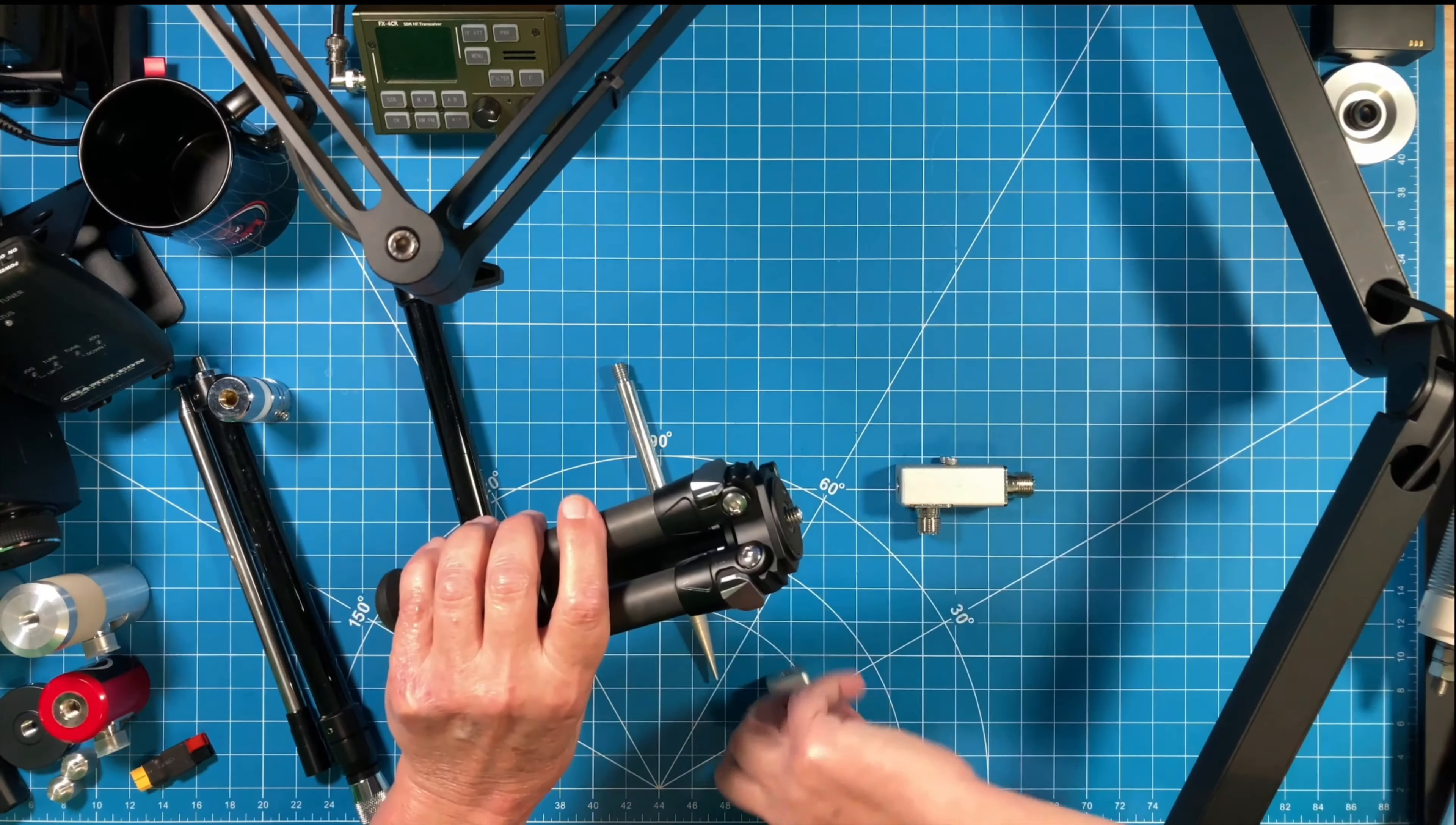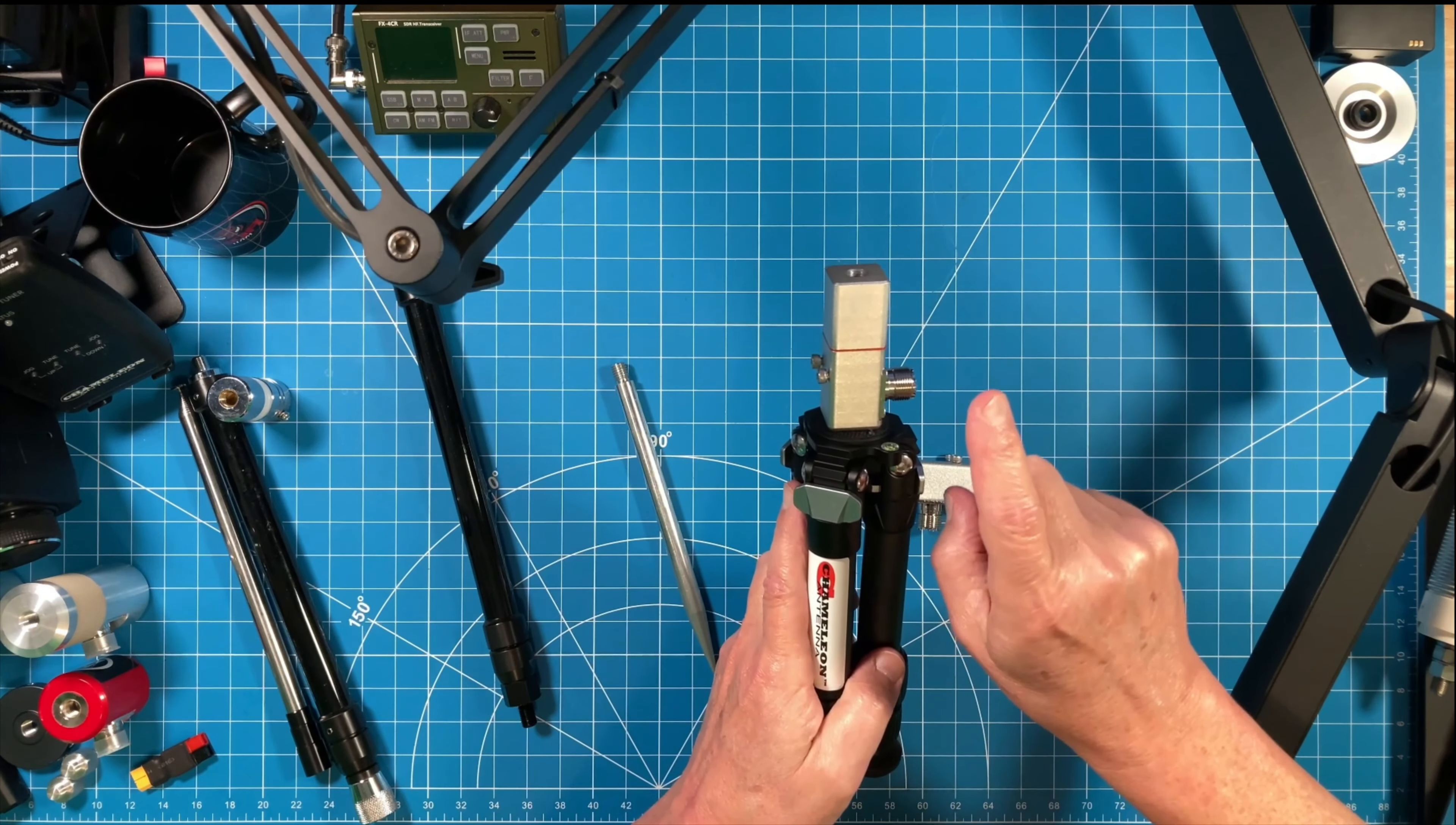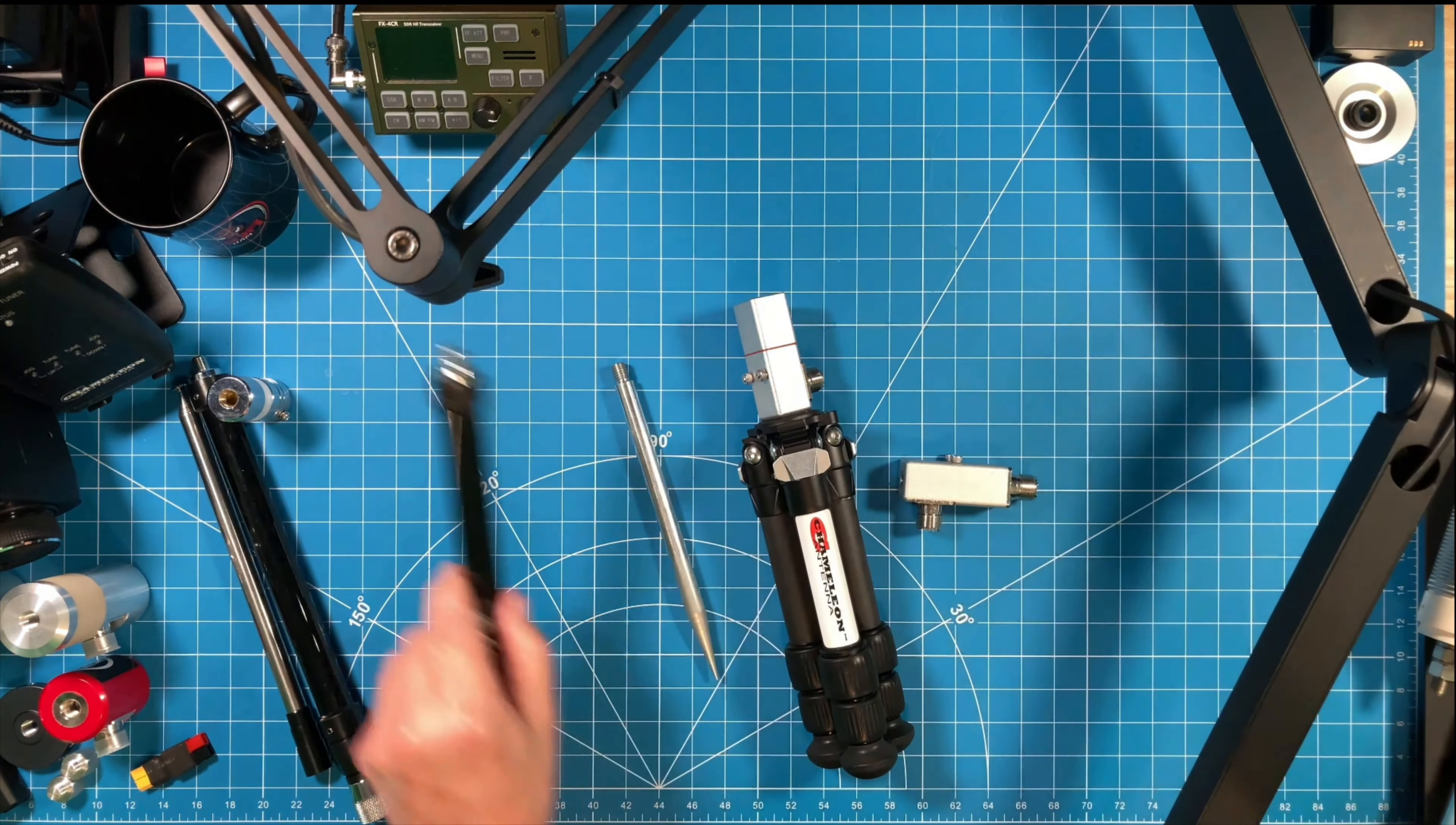Well what you can do with the chameleon tripod is this stud even though it's 3.8 and it's not metric. I believe this is probably M10 metric. It's a little bit of a loose fit but it does attach and so now what I have with my chameleon system is the ability to take part of my BD7 Maple ground spike kit and use it with the chameleon tripod out backyard portable or at the local park for pota or soda or wherever I want to operate.